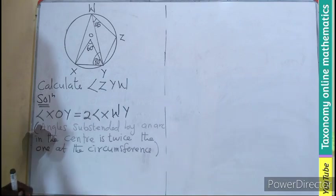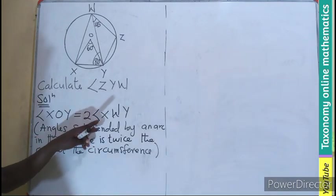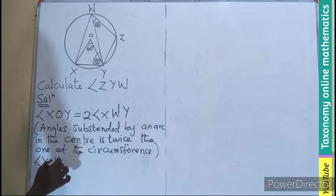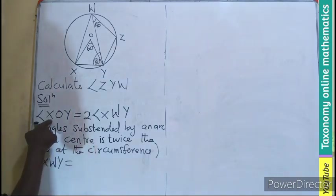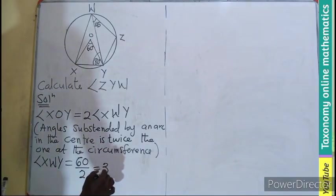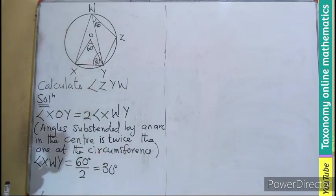So if that is out of the way, let's just say our angle XWY will be equal to this very angle we already know as well: 60 degrees divided by 2, and that gives rise to 30 degrees.